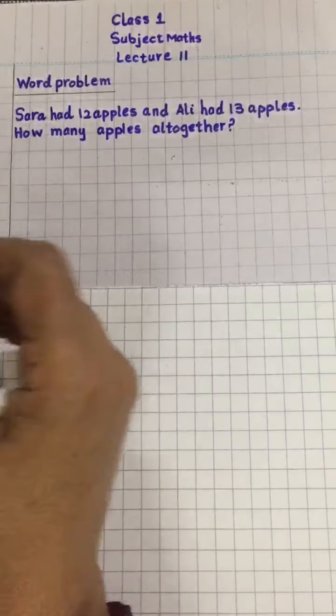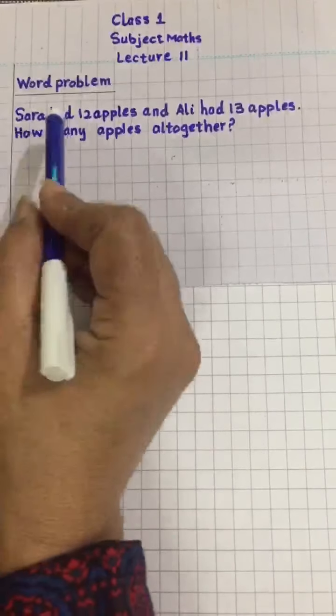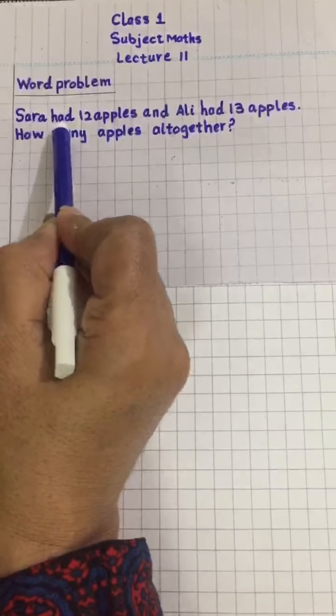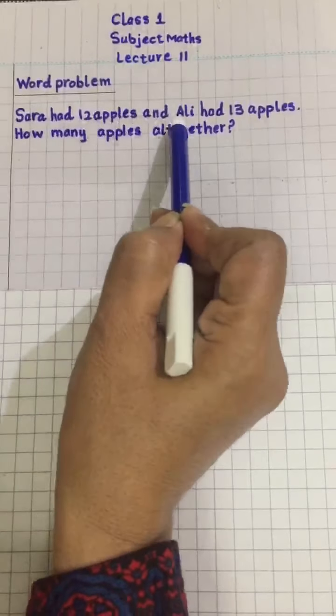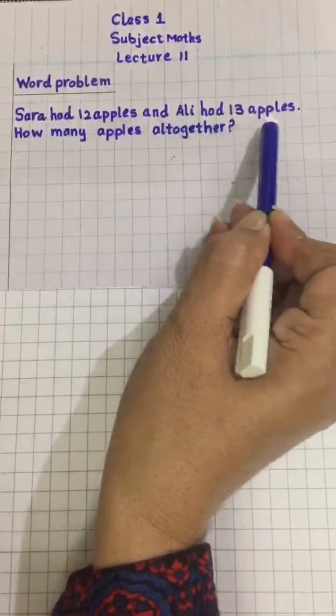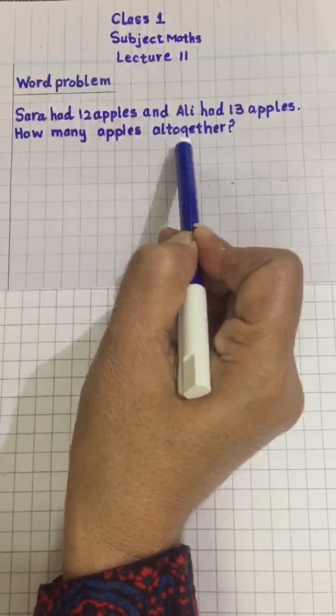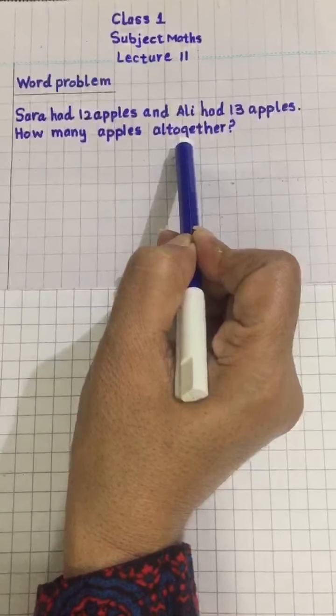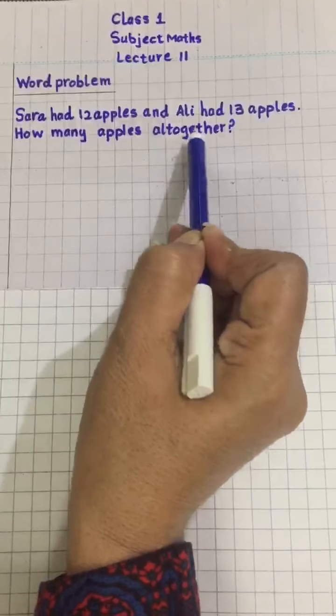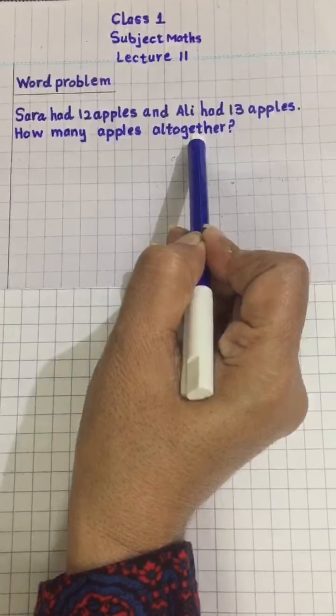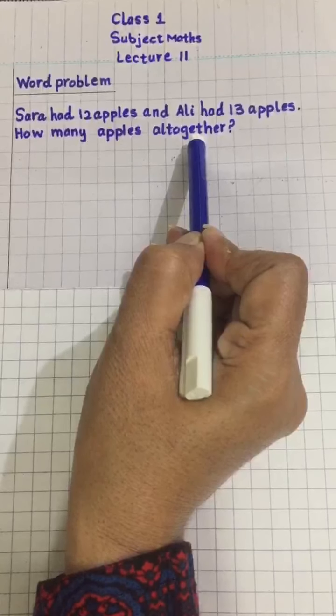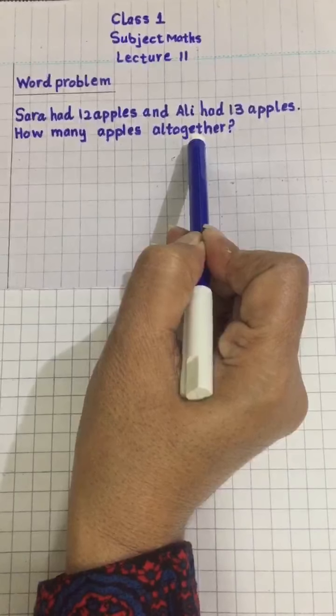First I will read the question. Sarah had 12 apples and Ali had 13 apples. How many apples all together? Children, whenever the word 'all together' is used at the end of the question, we always do addition.